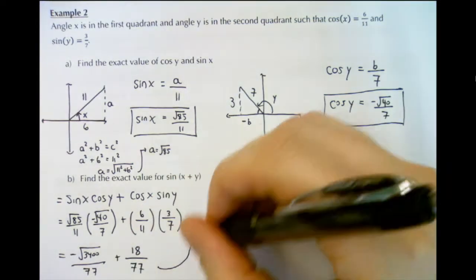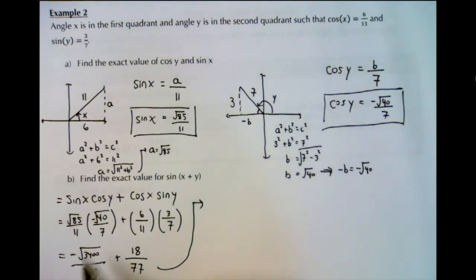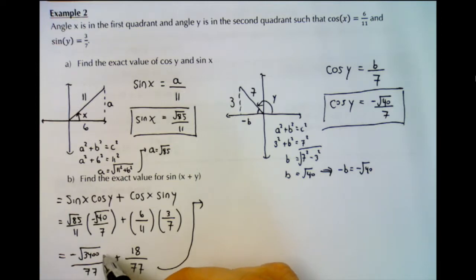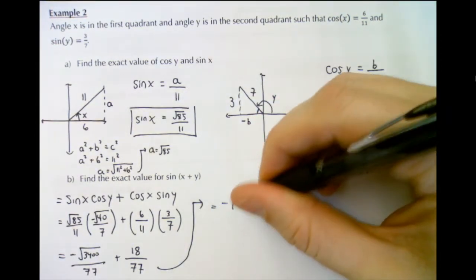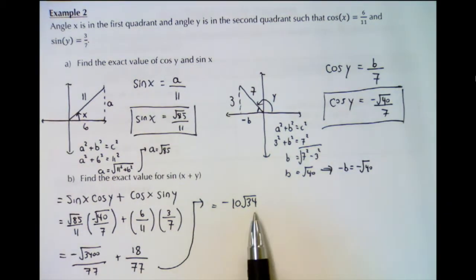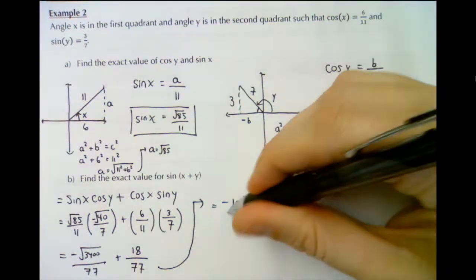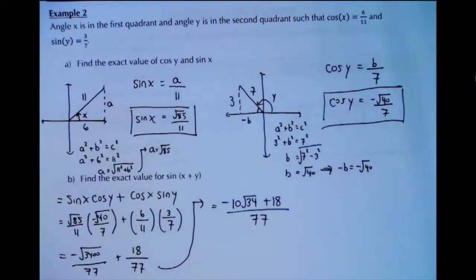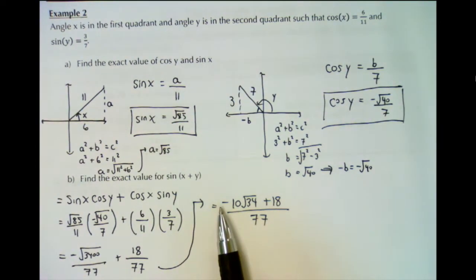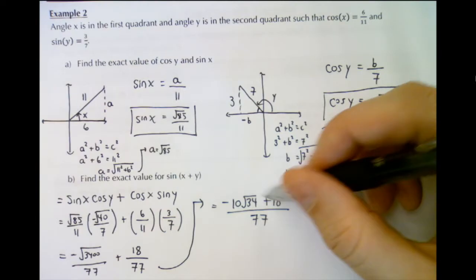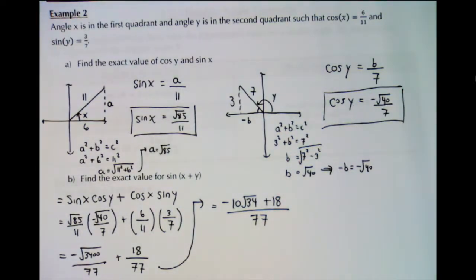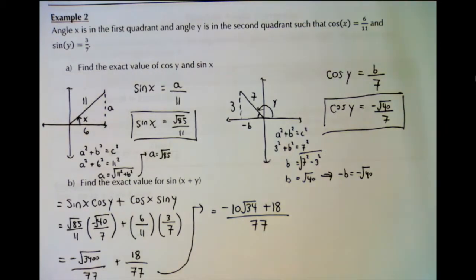Let's simplify root 3400. We can break it down into 34 times 100. The square root of 100 is 10, so this is negative 10 root 34. There's nothing else we can pull out of 34, so that's as simplified as possible. The final answer is negative 10 root 34 plus 18, all over 77. You can also write it as 18 minus 10 root 34 over 77. This is the exact value of sine x plus y when given cos x and sine y.